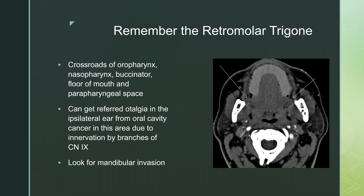The retromolar trigone is that crossroads of the oropharynx, nasopharynx, buccinator, floor of mouth, and pharyngeal space. In that space there is some mucosa, some vessels, and it's a good place for spread of infection or tumor.